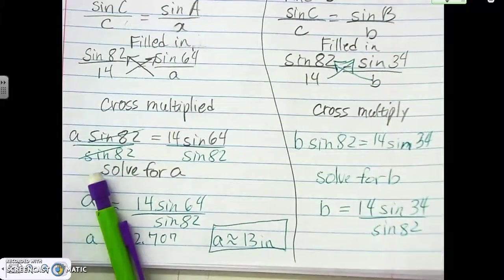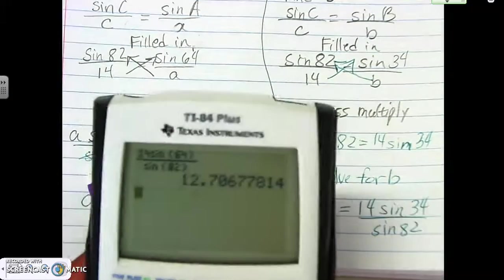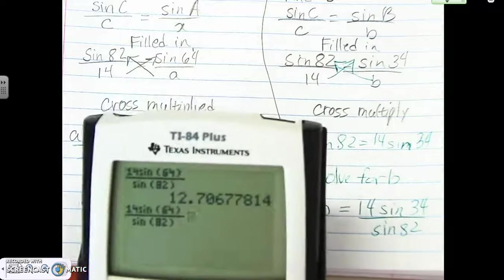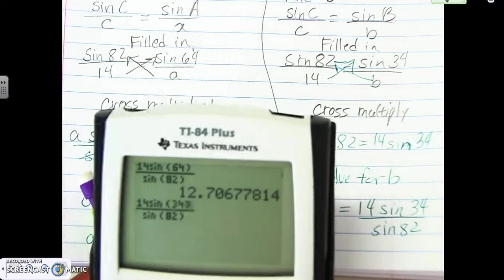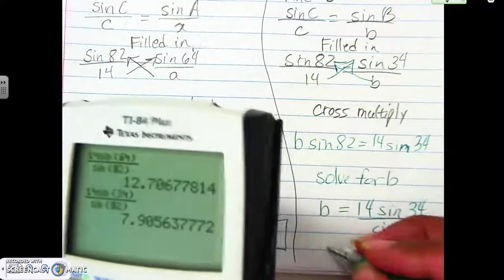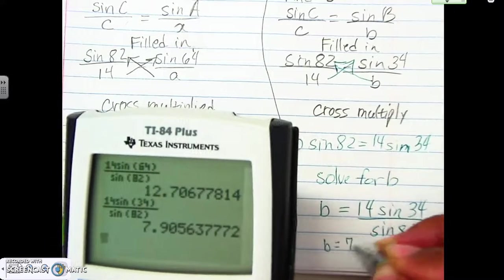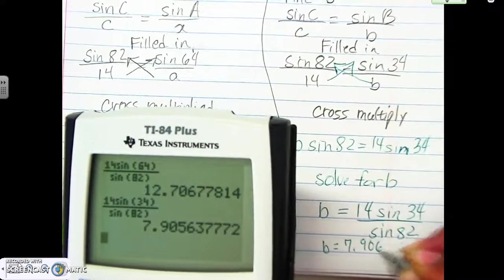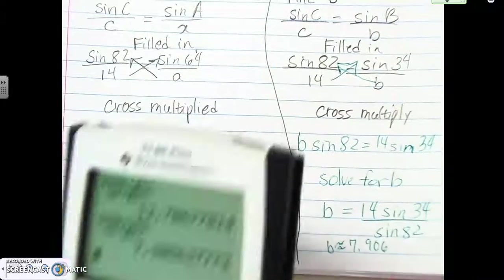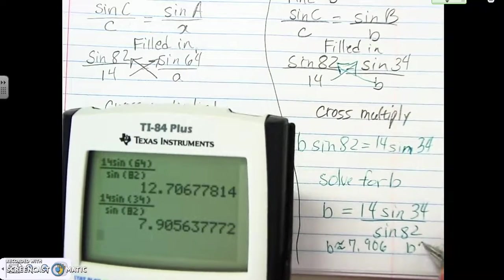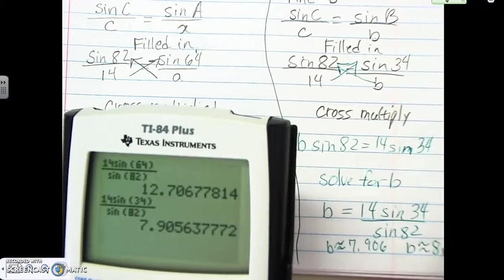And again, you can do a second enter again to bring it back up, and we just change that one number, 64, to 34. Hit enter. And so side B is about 7.906, and that's going to be approximate there. Sorry. Approximate. And so we're going to round it to the whole number. So it's approximately 8 inches.